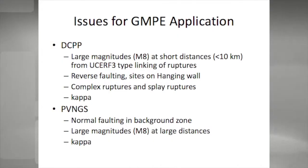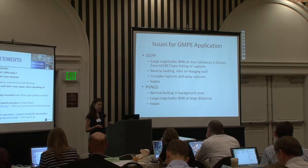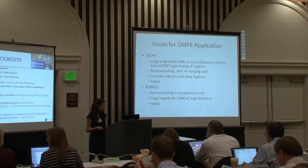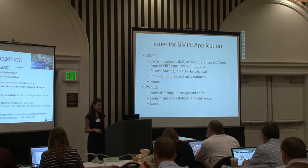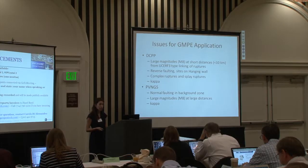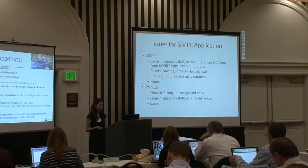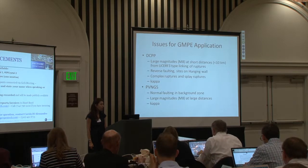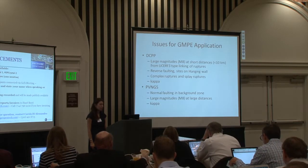For Diablo Canyon, what really matters — as we saw from the hazard sensitivity plots — are the large magnitudes at short distances. There are faults that are known to link, so this is a topic that needs to be addressed well. We also have the problem of the dipping fault, in particular the reverse fault and the associated hanging wall effects. Linked to fault linkage, we need to address complex ruptures and splay ruptures. We will also cover the issue of Kappa today, since we ran out of time yesterday.